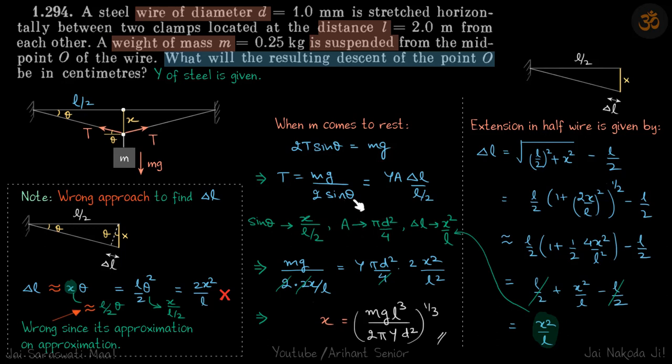We approximated sin theta to be X by L by 2, that is fine. And we approximated delta L to be X square by L, that is also fine. But within approximation we cannot do another approximation. We have taken two approximations, sin theta and delta L, but they are not on top of each other.